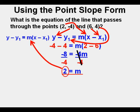The slope of 2 replaces the m. We'll use this first point, so x1 is 2. And y1 will be negative 4.